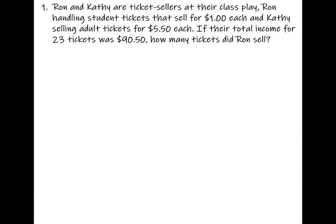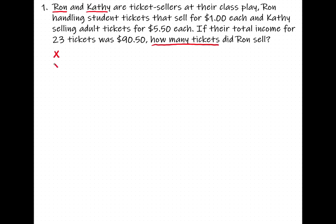As always with every word problem, the first step is to identify what is unknown in the problem. The last sentence asks how many tickets did Ron sell, so we're looking for a number of tickets. We don't know how many tickets Ron sold and we don't know how many tickets Kathy sold. Let's give these symbols: let x be the number of tickets from Ron, and y be the number of tickets from Kathy.